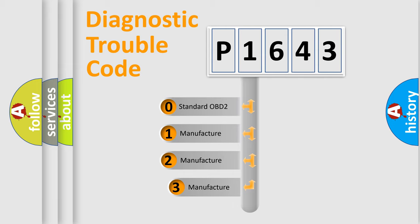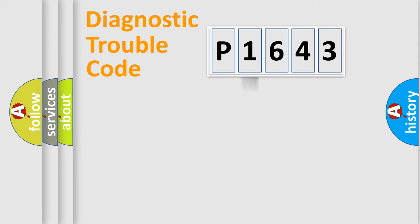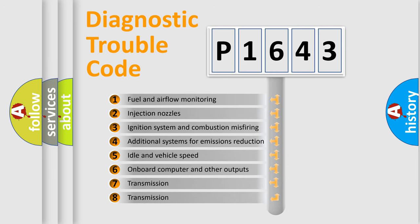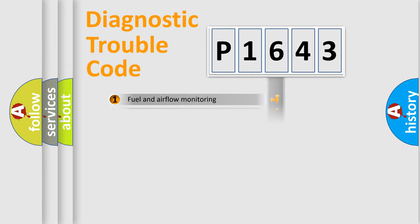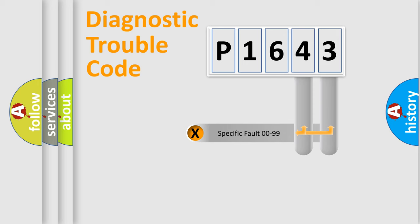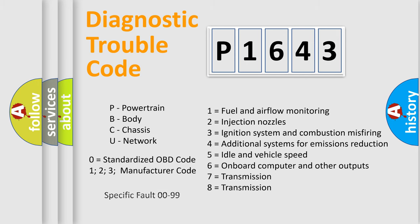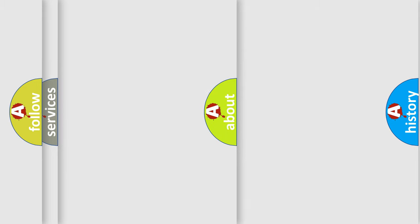If the second character is expressed as zero, it is a standardized error. In the case of numbers 1, 2, or 3, it is a more specific expression of a car-specific error. The third character specifies a subset of errors. This division is valid only for the standardized DTC code, where only the last two characters define the specific fault of the group. Such a division is valid only if the second character code is expressed by the number zero.